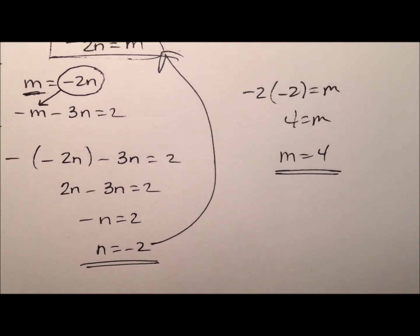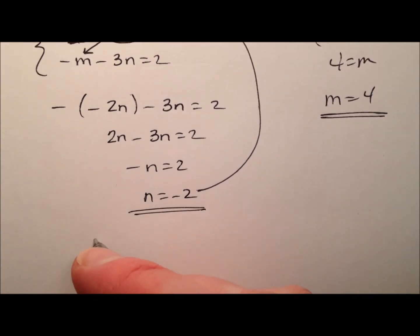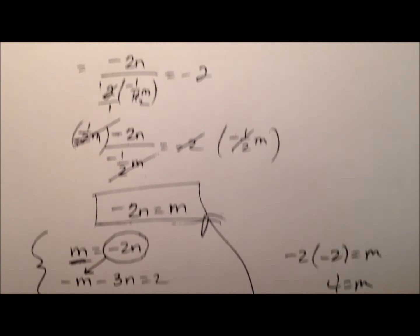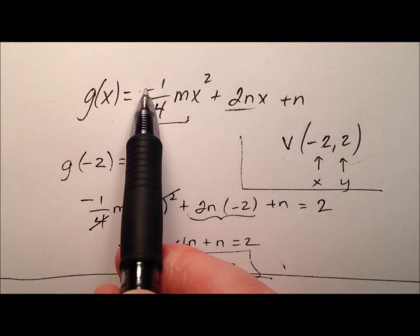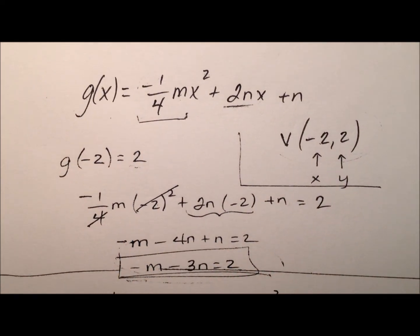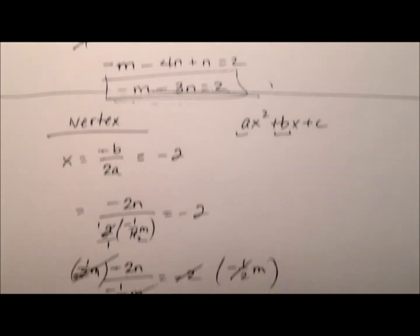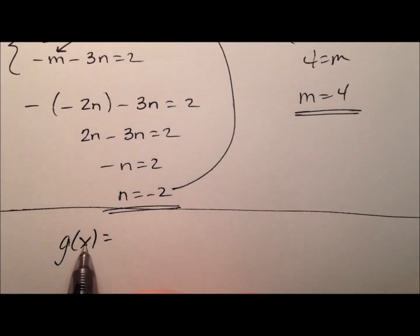All right. So, let's go ahead and put all of this information together and let's write this function g of x. So, we knew that my g of x is negative 1 fourth m x squared plus 2n x plus n. So, let's just plug everything in.